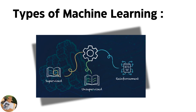Types of machine learning — we have three types: supervised, unsupervised, and reinforcement. Supervised means we have input and output data, and we do some processing to train the model. Unsupervised means we have input without output.